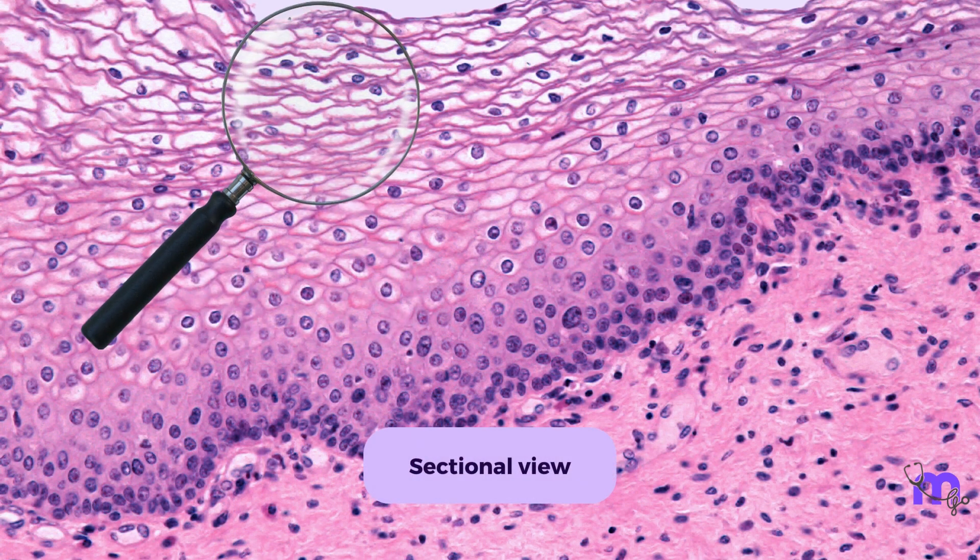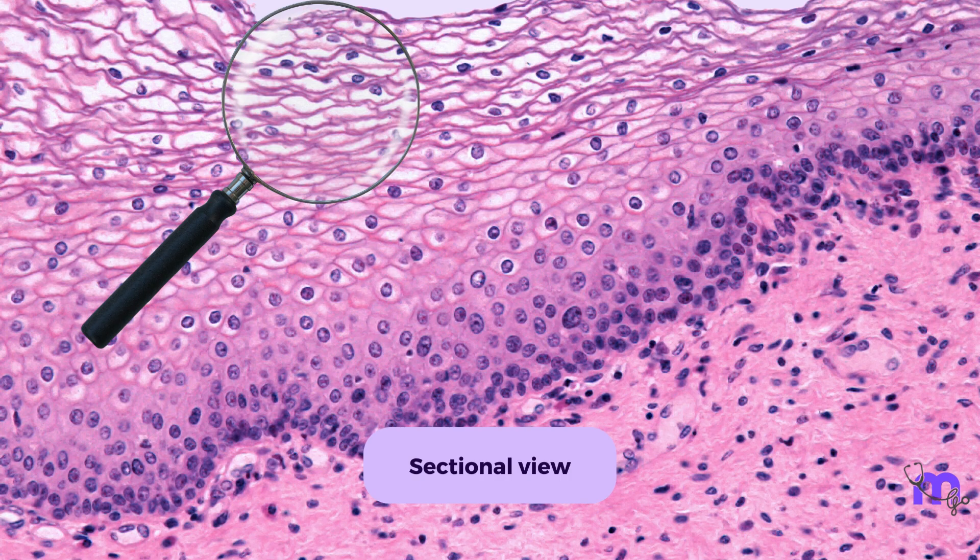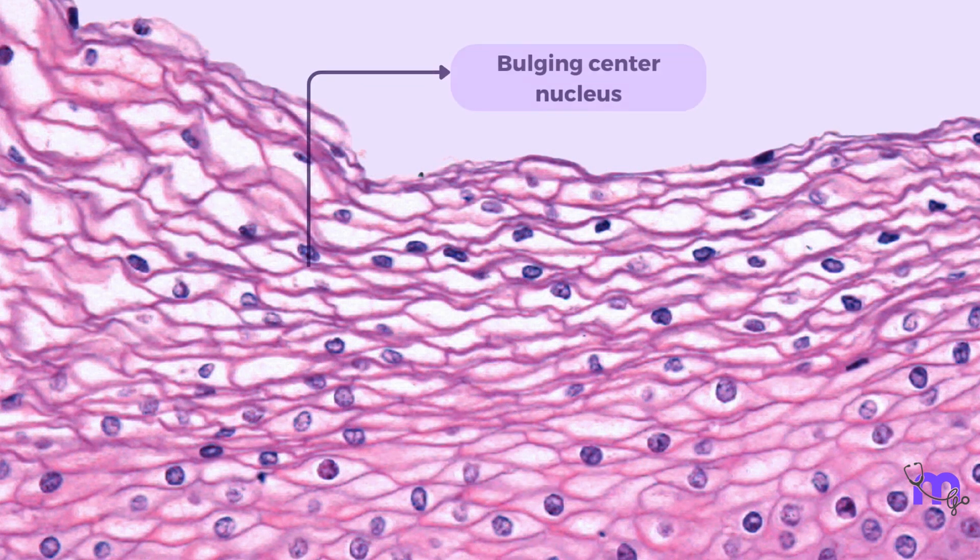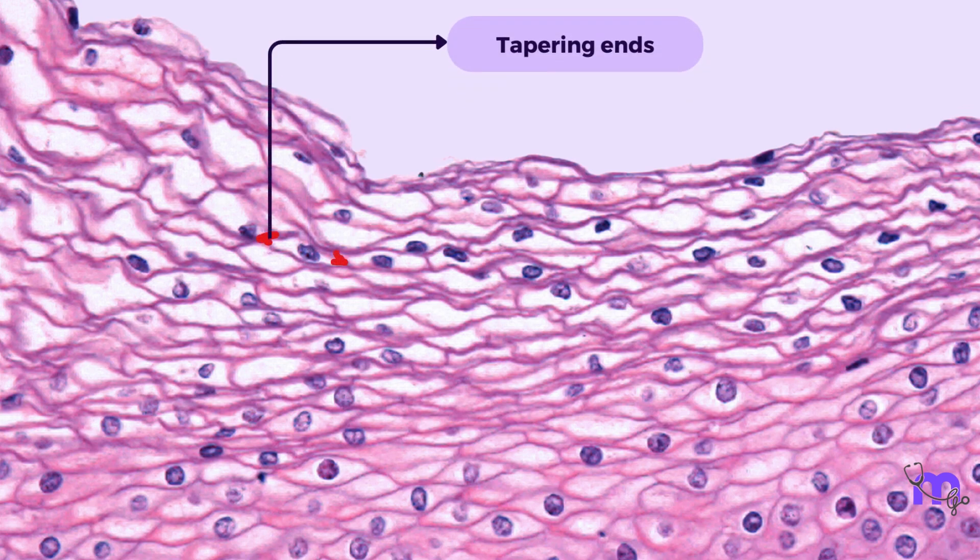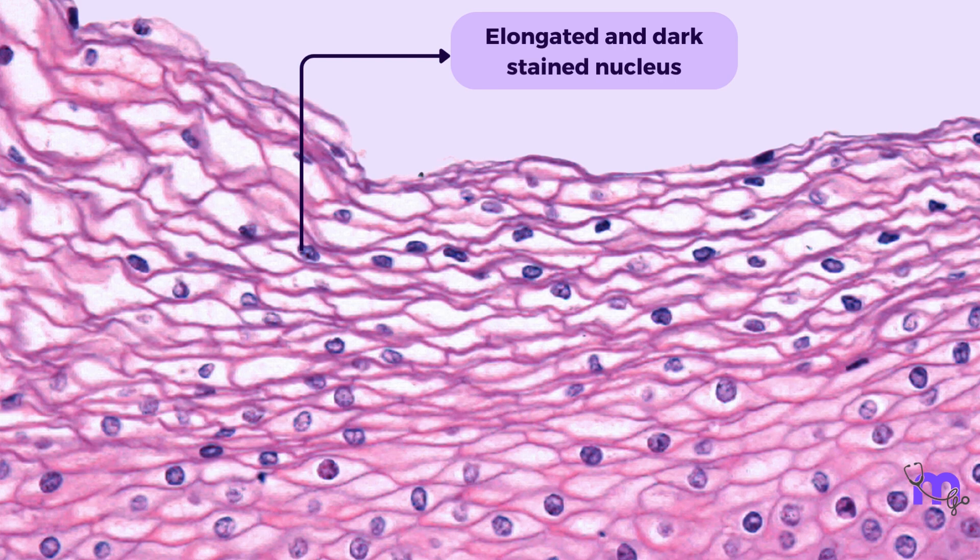In the sectional view, the cells appear spindle-shaped with scanty cytoplasm, a bulge at the centre produced by the nucleus within, and tapering ends. The nucleus is elongated and stains dark purple or blue.